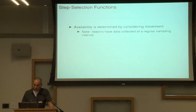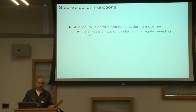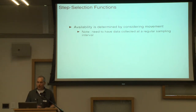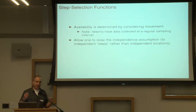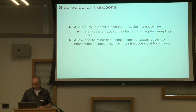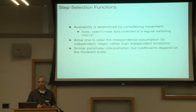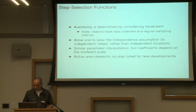To summarize: now we have available points generated by considering how an animal moves — we compare where an animal went to where it could have gone. You need observations collected at sequential regular time steps. This allows you to relax the independence assumption between locations, though the steps themselves are still assumed independent. You have similar parameter interpretation, but you've modeled things on a different scale — modeling how animals select habitat features at a very local scale. This is a really active area of research with lots of opportunity for new ideas.